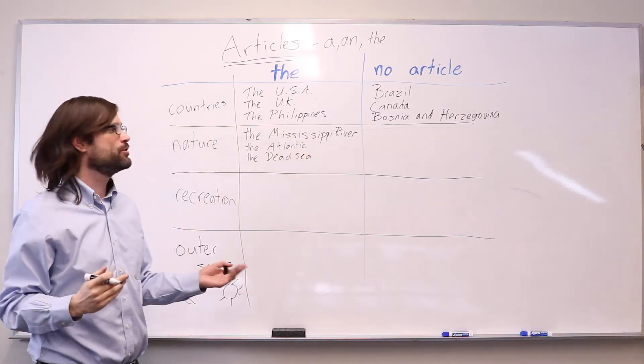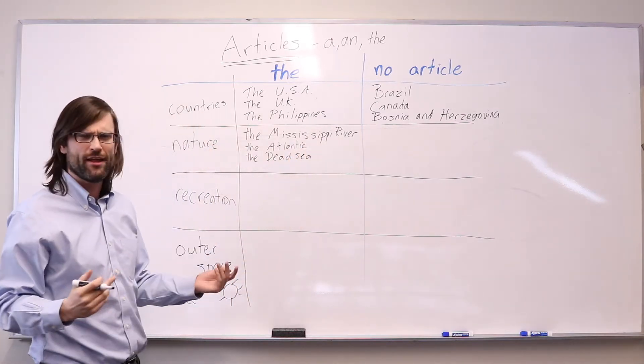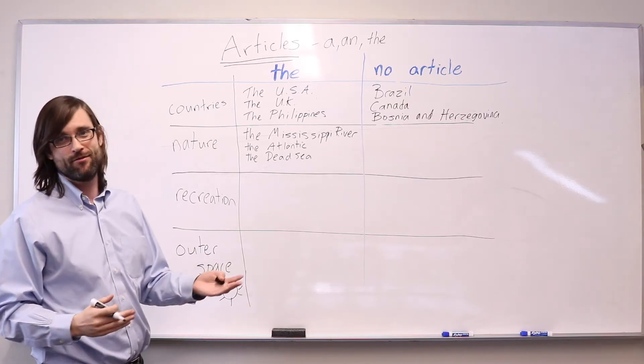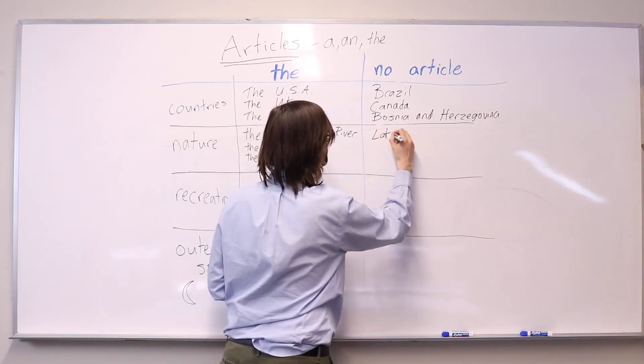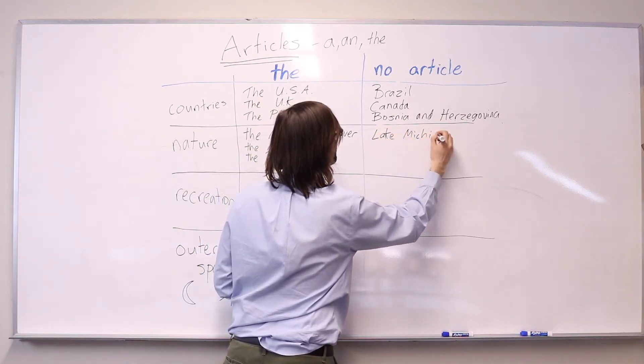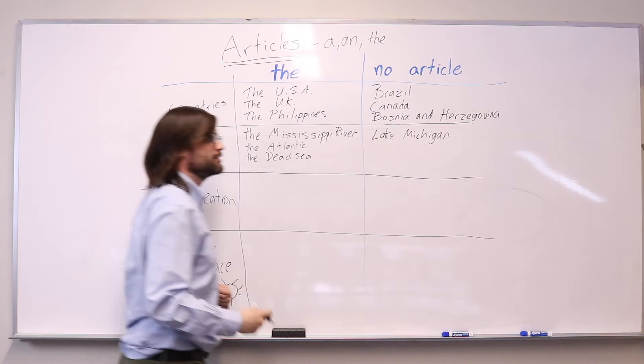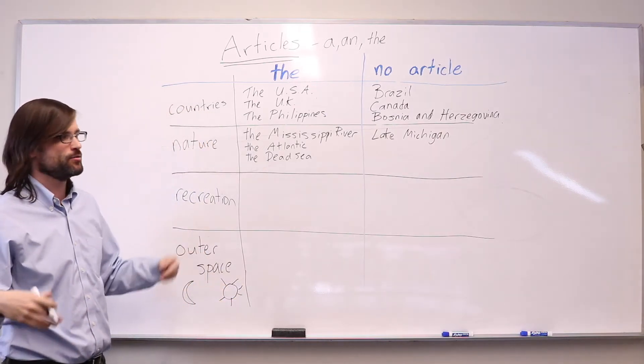However, we do not use an article with lakes. Why? If you can figure out, please let me know, because my students ask me the same question. Lake Michigan. Lake Ontario. Lake Superior.